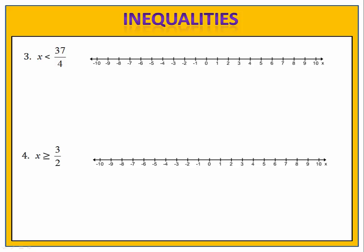Exercises three and four are for you to try. Please pause the video here and complete them. In exercise three, we want x is less than 37 fourths. 37 fourths is nine and one fourth. We shade everything that's less than nine and one fourth, and we have an open dot at nine and one fourth because it's not included. Exercise four has all values greater than or equal to three halves, which is one and a half. We shade the number line for all values greater than one and a half and include a solid circle at the end point to indicate that one and a half is included in the set.